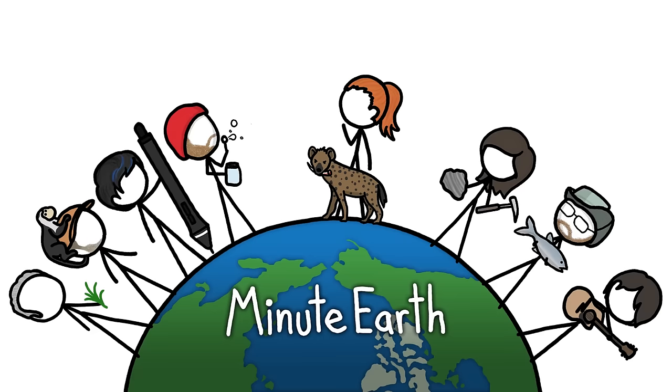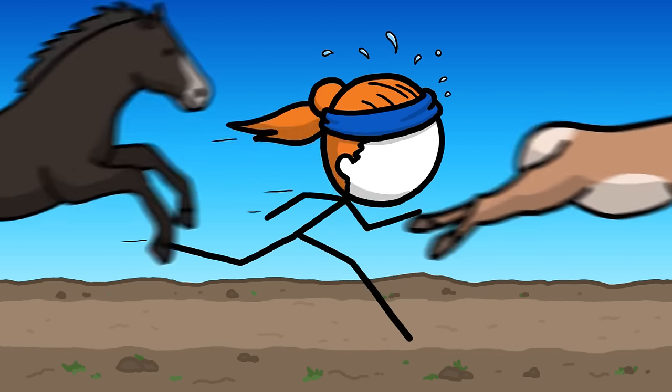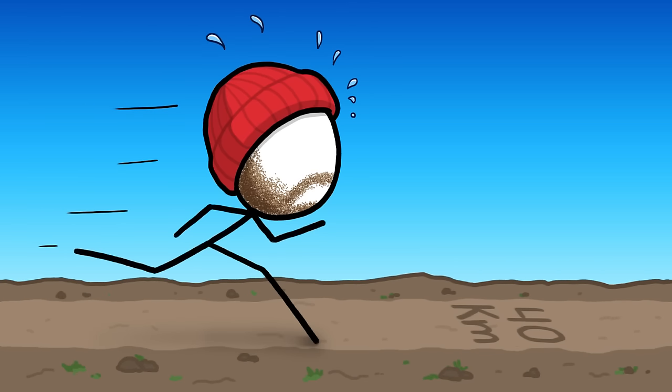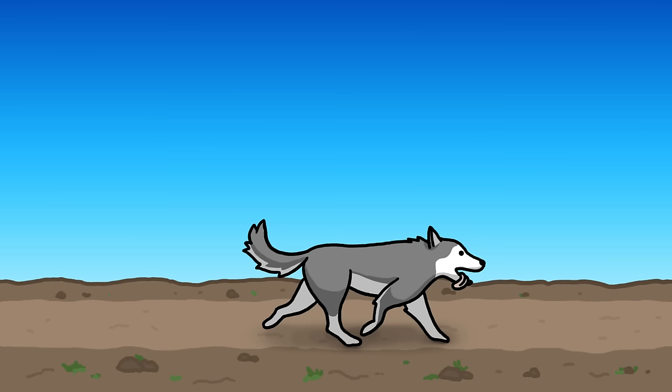Hi, this is Kate from MinuteEarth. Humans are not the fastest mammals on the planet, but over really long distances, we can outrun every other species on land, except certain dogs.